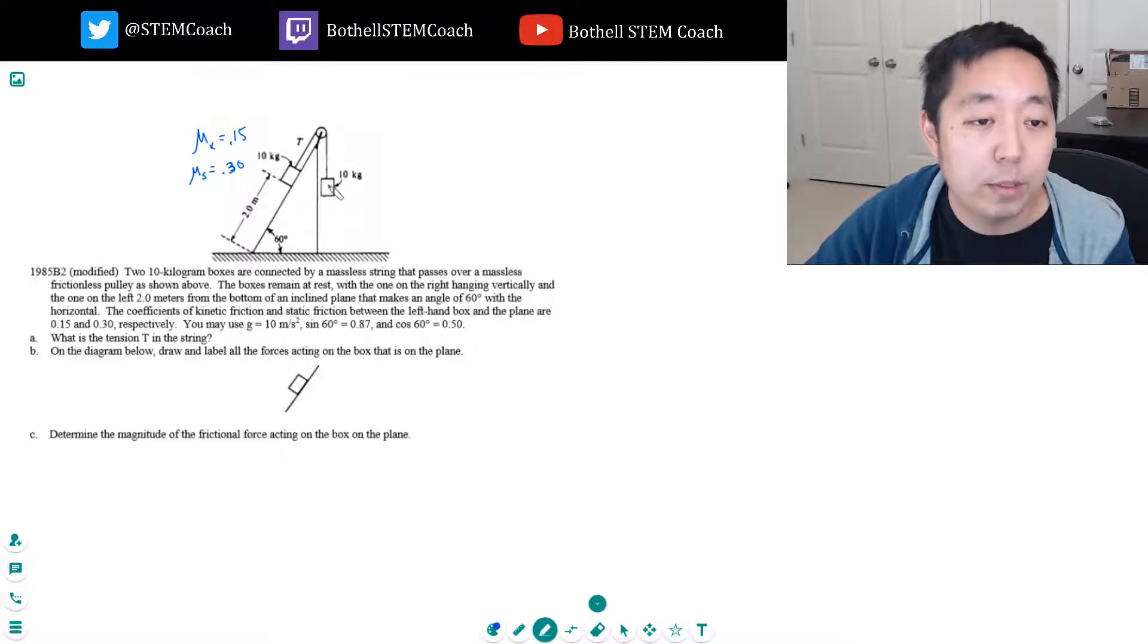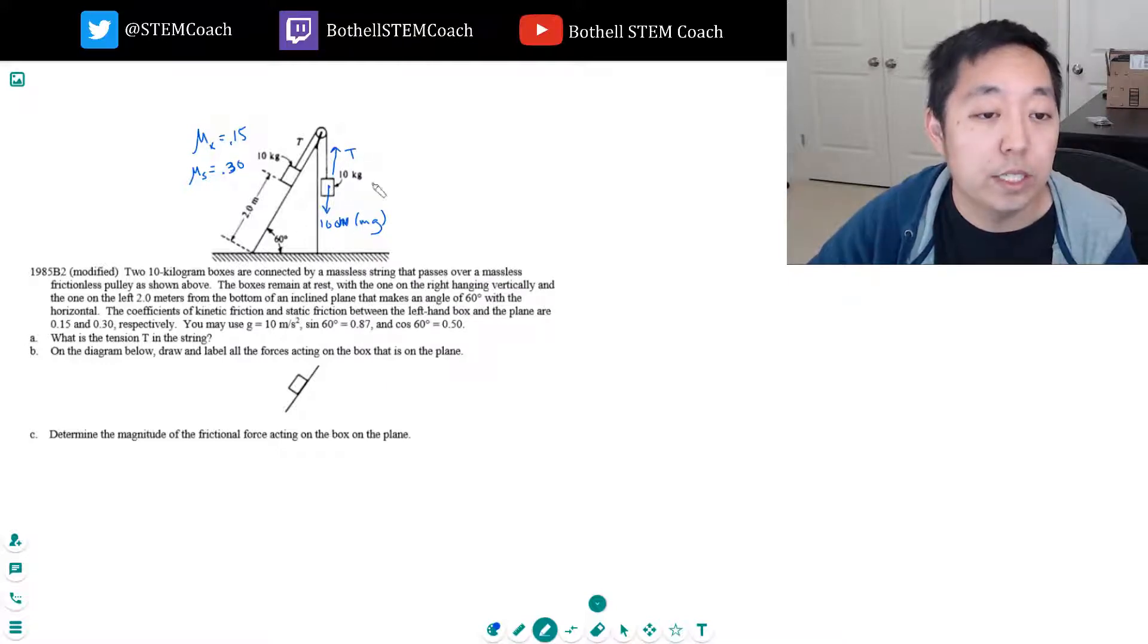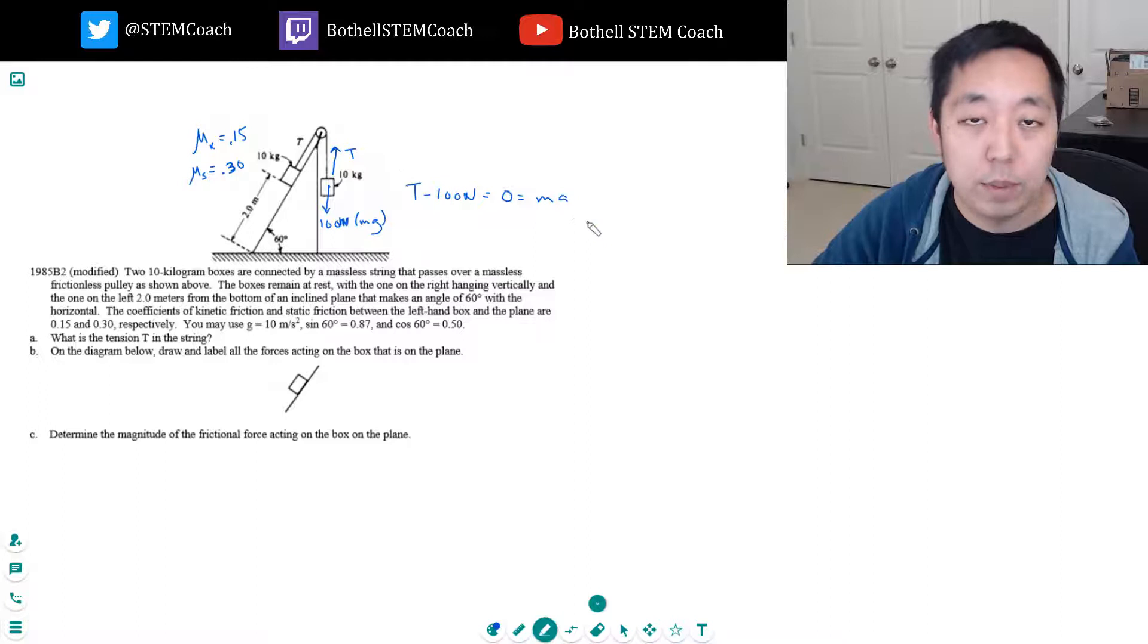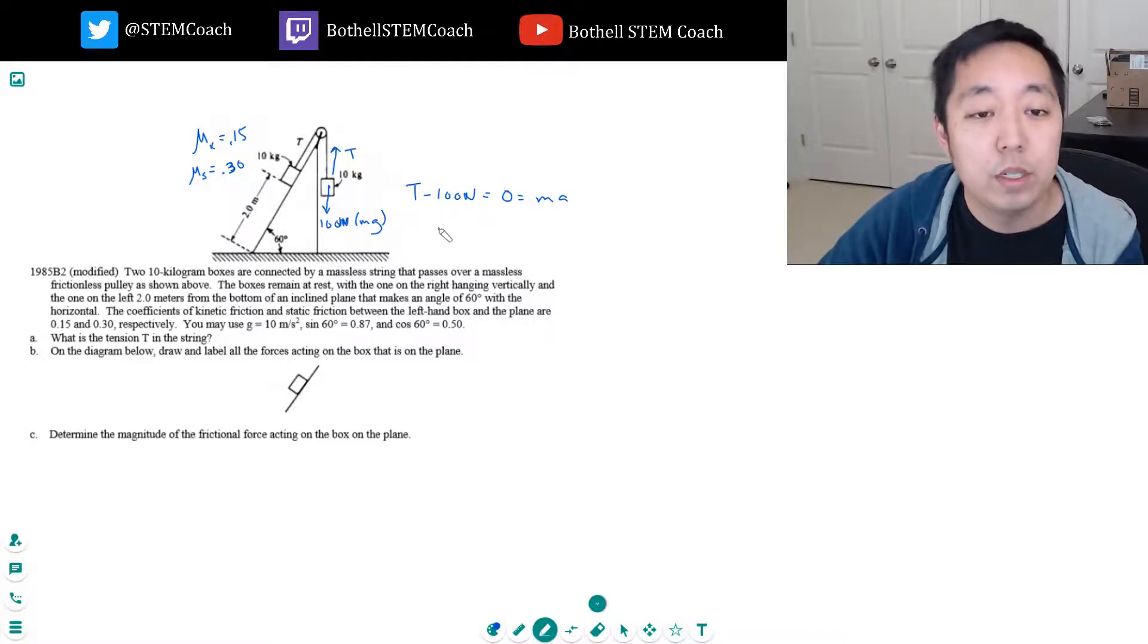Okay, free body diagram on this guy. This guy's receiving 100 newtons down, right? mg, and because g is about 10, 10 times 10 is 100. There's a tension up this way. And so this is pretty easy to compute the tension because the net acceleration on this has to be 0. T minus 100 newtons has to equal 0 because this is equal to ma and a is 0, right? Net force equals ma. It's always the same net force equals ma. So the tension has to be 100 newtons. That's the tension in the rope. That's part A.